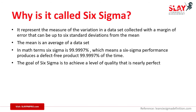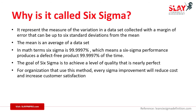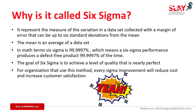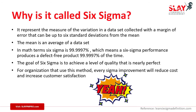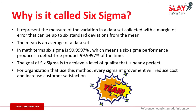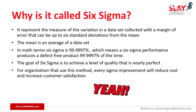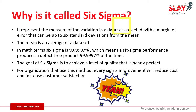The goal of Six Sigma is to achieve a level of quality that is nearly perfect. For organizations that use this method, every Sigma improvement — from a Two Sigma to a Three Sigma and so on — will reduce cost and increase customer satisfaction.